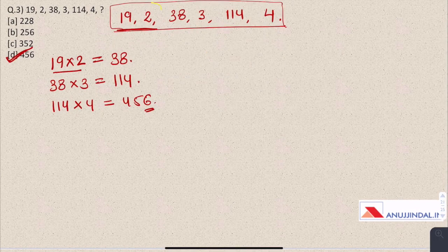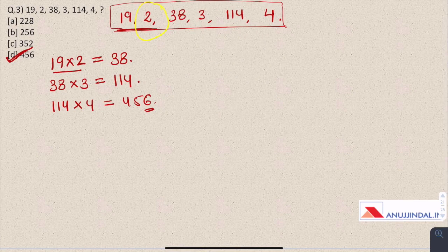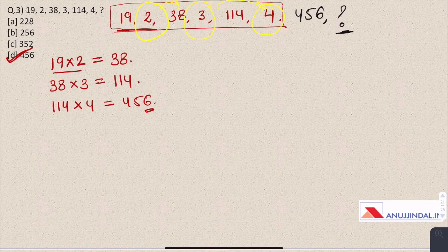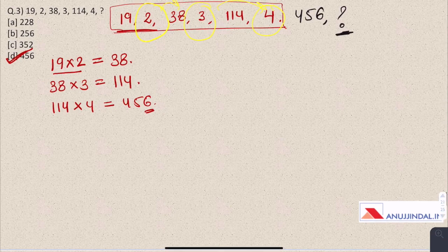Here we are also writing the number by which we are multiplying the next number in the series. Don't forget that. If you would have been given the value 456 in the question itself and asked about the value of the eighth number, then it would have been 5, because we are also writing the number by which we are multiplying the next numbers.